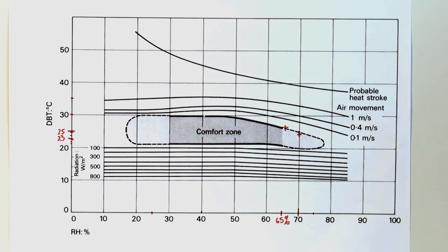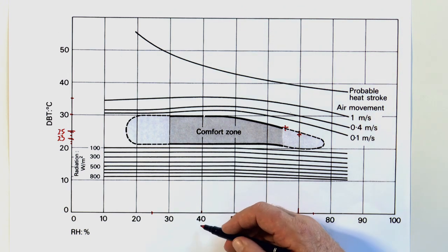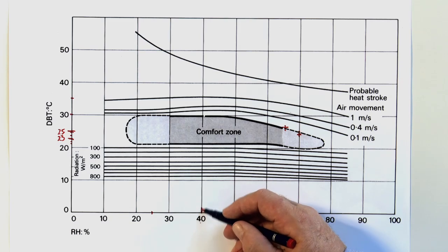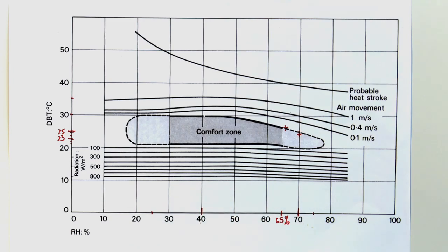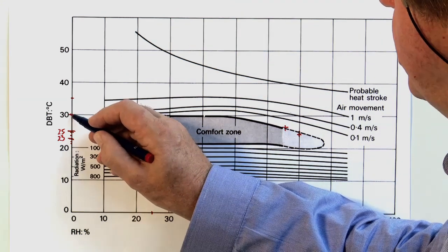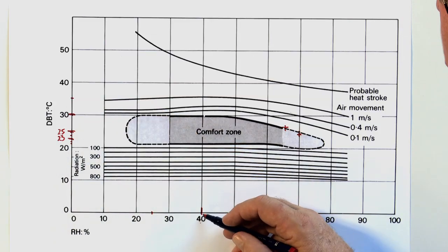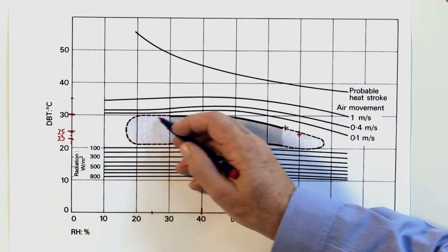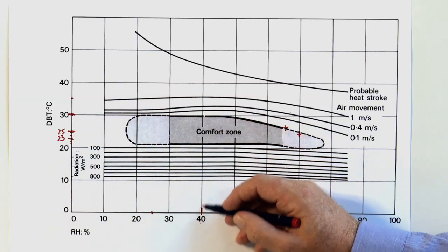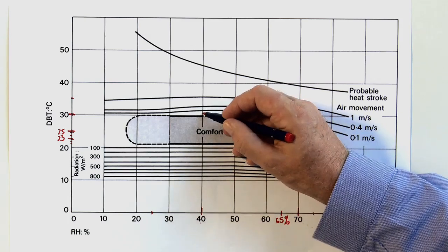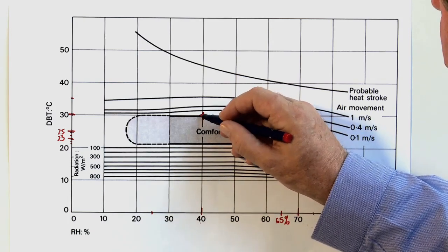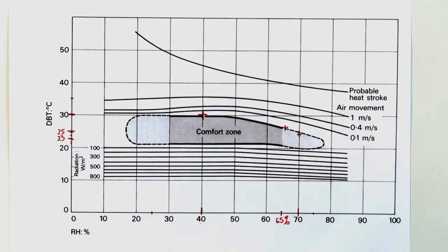The next example we looked at was 40% relative humidity. In this case we were looking at a dry bulb temperature of 30 degrees, moving across and up, we plot again right on the border of the comfort zone.